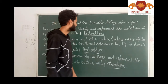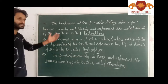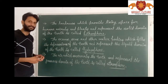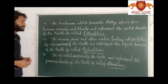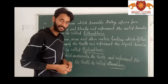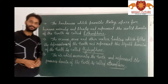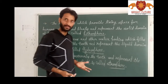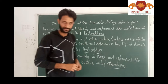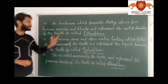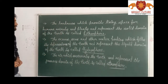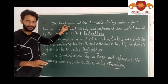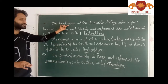Let's talk about the definitions of these three domains. First, lithosphere: the landmass which provides living space for humans, animals, and plants and represents the solid domain of the earth is called lithosphere. It means the total landmass of the earth.